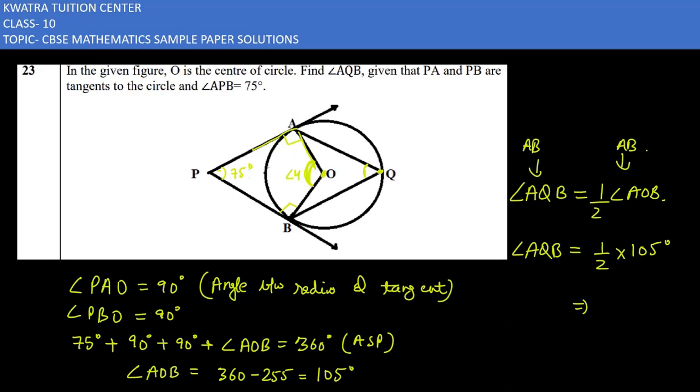AQB value is 105 divided by 2, which gives you 52.5 degrees. So yes, the value for AQB is 52.5 degrees. Now we will be moving to the next one.